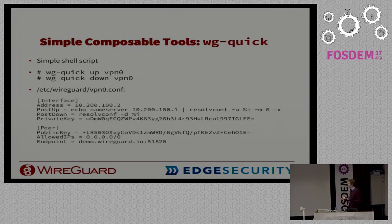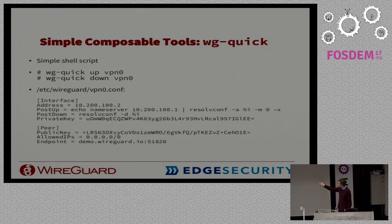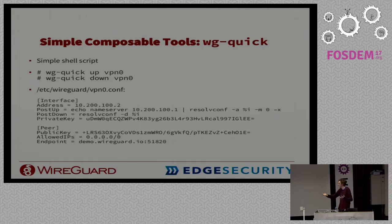wg-quick uses a config file with the same ini syntax as wg, but adds a couple of keys — like a post-up and post-down script for DNS. It lives in /etc/wireguard/ and then the interface name .conf. It's not a sophisticated utility, just a simple bash script that uses all the other things. But because the building blocks are so basic, you have more than enough license to make whatever other complex tool you want.